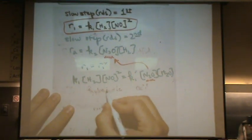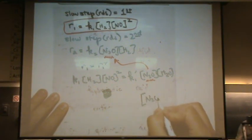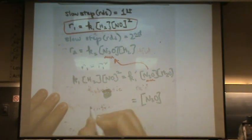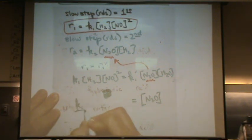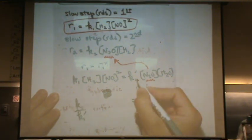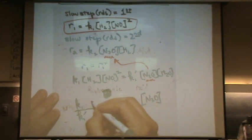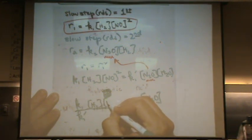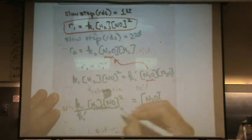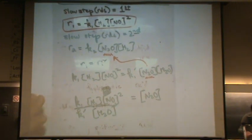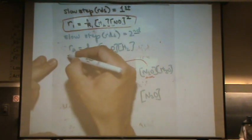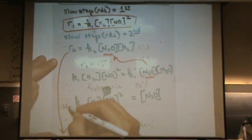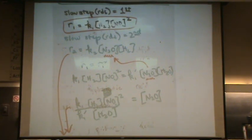Well, if I do that, N2O equals K1 over K1 prime, just moving the K1 prime over, times H2 NO squared all over H2O. Now I have this expression, I'm going to combine this equation and this equation together. Plug it in for the N2O.